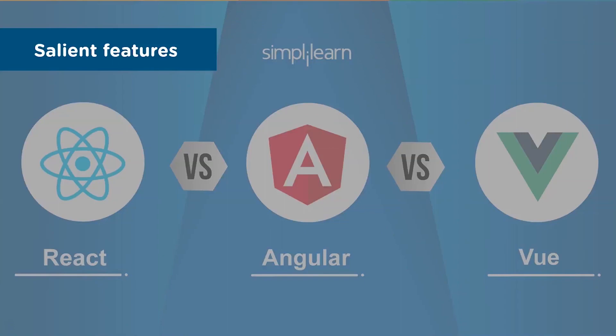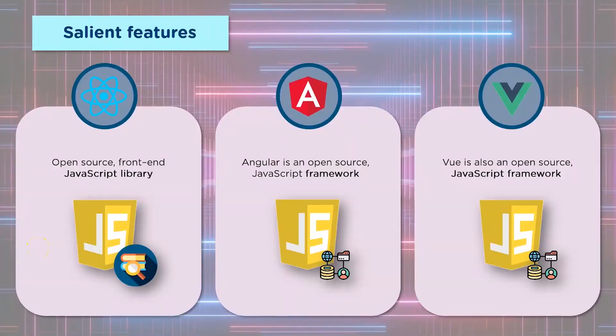First, we'll look into the salient features. React is a front-end JavaScript library, while Angular and Vue are JavaScript frameworks. Although the terms library and framework are used interchangeably, they're significantly different. A library is a set of classes or functions and the user is in complete control to call them. Frameworks, on the other hand, are like models — they have limited choices and come with a blueprint of their own, so the user doesn't have much control.